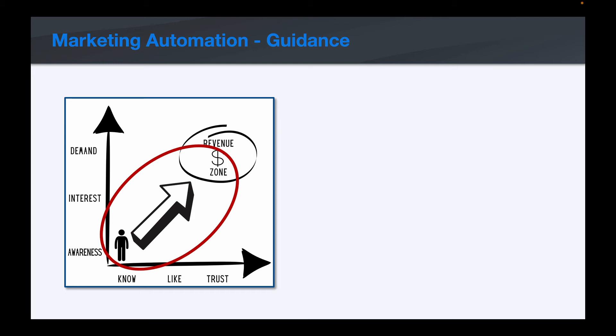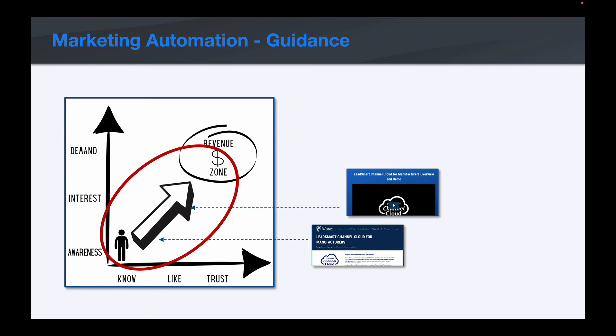For example, let's say the first step of your yellow brick road is having the prospect read information about your product and company — something that indoctrinates them into what you do and why it's important. And you've learned that once they know a little about your company, the next step is to have them watch a demo. Your smart sequences can be set up so that when a prospect visits the page where they read about the company, you send them another email — in 10 minutes, 20 minutes, an hour, whatever the case may be — that takes them to the next step: watching the demo. Once they've watched the demo, another email could recommend a case study or customer testimonial, whatever makes sense for your yellow brick road. So we're using this to drive and guide the prospect through the yellow brick road.